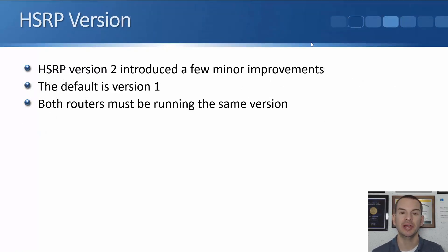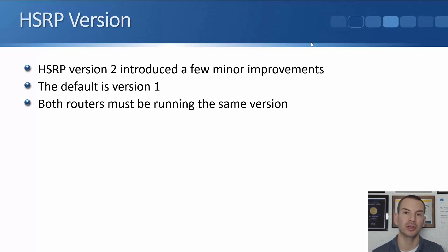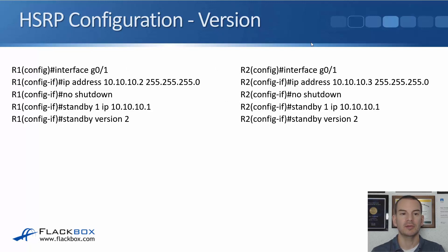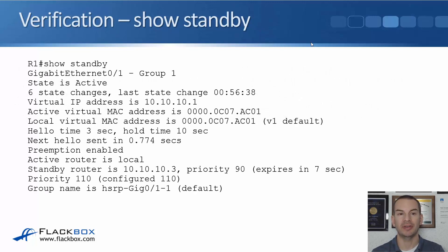Another thing we can configure is the version. HSRP version 2 introduced a few minor improvements, but in the real world you'll often see people still running version 1, which is the default. Both routers must be running the same version, so if you enable version 2, make sure you enable it on both routers. The configuration is just one additional command: standby version 2. For verifying these commands, it's the normal command to verify HSRP: show standby.